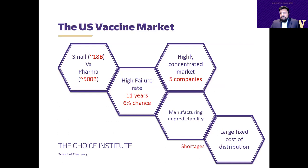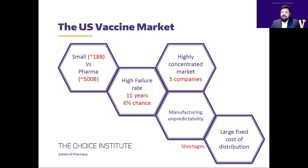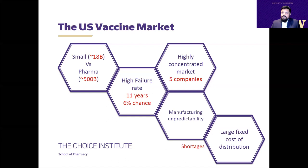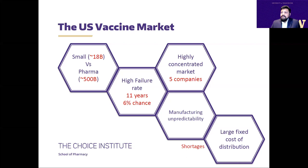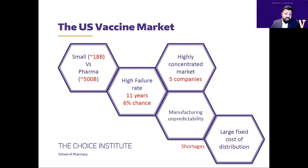To understand this model, let's look at the U.S. vaccine market. The vaccine market is typically a tiny fraction of the overall pharma market — about $18 billion compared to pharma's $500 billion. It's characterized by a very high failure rate: only about 6% of vaccine candidates come to market. It takes about 11 years on average for a vaccine to reach the market. It is also highly concentrated — in the U.S., about five companies supply almost 100% of all vaccines. There is continuous manufacturing unpredictability and large fixed costs of distribution that often lead to shortages. Overall, vaccine markets are relatively less attractive to private R&D investments, so research in many of these areas is driven by public dollars.